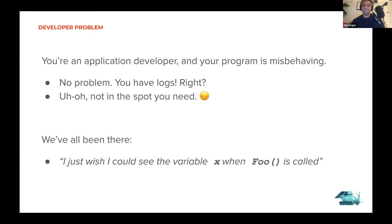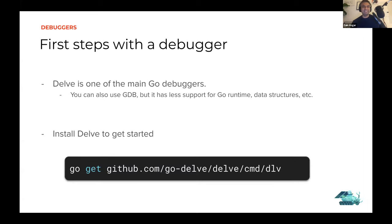I'll start off talking about debuggers and how they work, then evolve that to how we can apply the same concepts using eBPF. We have a Go binary and we want to debug it. The standard way to do this in Go is to use Delve. You can also use GDB, which is typically used for C programs. It works because Go compiles down to machine code just like C does, but GDB has less support for things in the Go runtime. Delve is pretty easy to get started with.